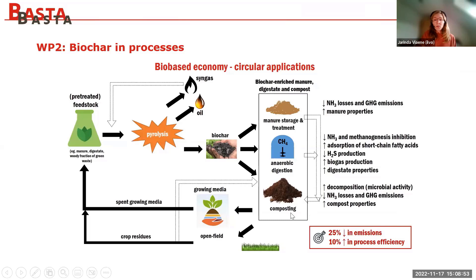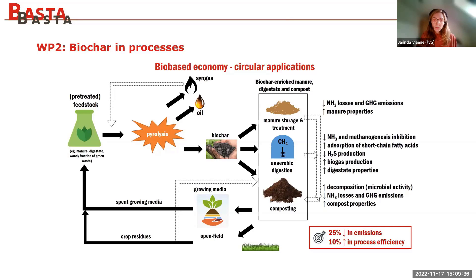Biochar can optimize the process but can also reduce nutrient losses to the environment. Afterwards, in a second step, we aim to use the biochar-enriched end products — the biochar-enriched manure, digestate, and compost — on the field, or as a peat replacer in growing media. The waste products coming from cultivation, like spent growing media or crop residues, can be used again as feedstock for biochar production. In that way we have a multiple use of biochar and a closed loop.